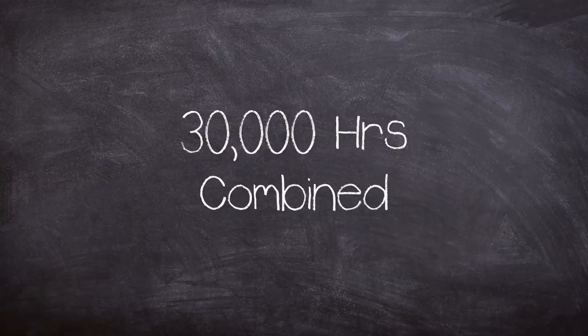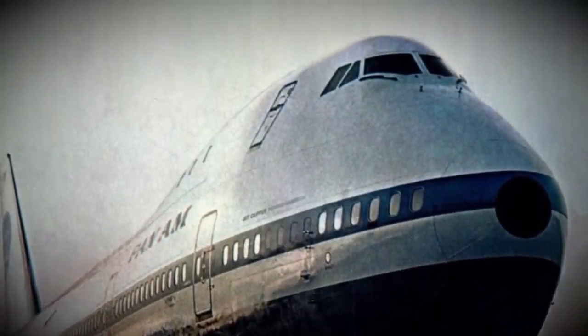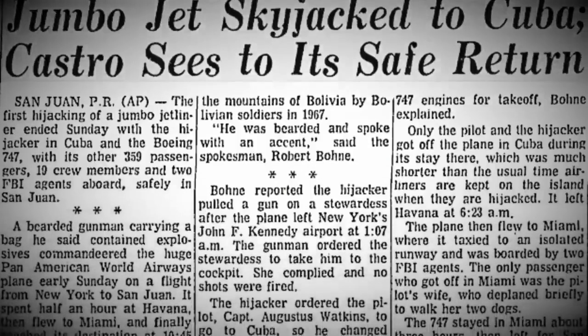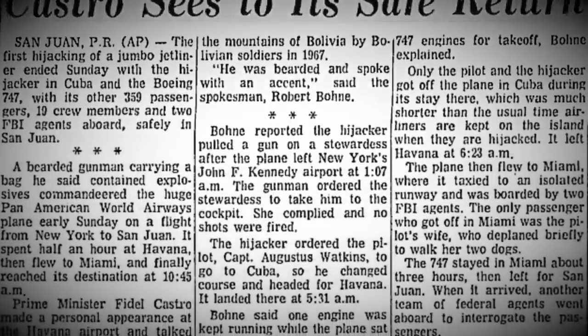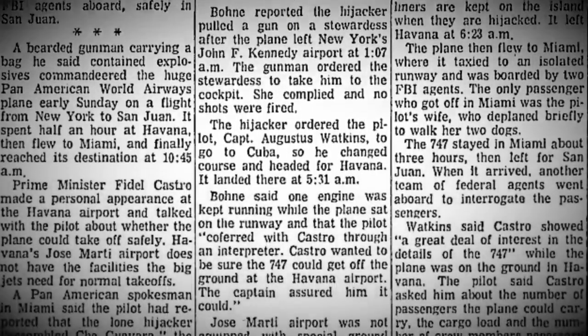The Pan Am plane was quite a historically important specimen for the 747's legacy. It had operated the inaugural 747 commercial flight on the 22nd of January 1970. Not only that, but the plane had the honour on 2nd of August 1970 to become the first 747 to be hijacked.